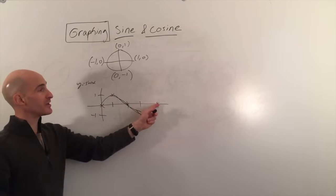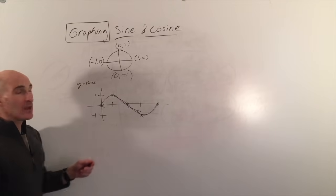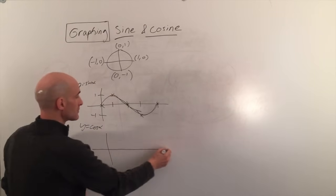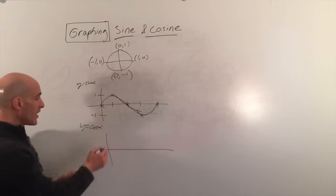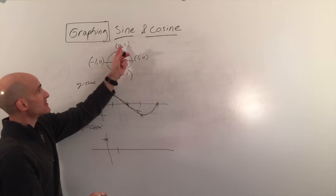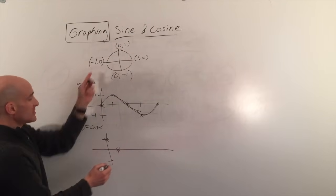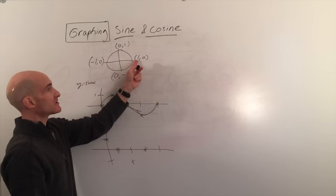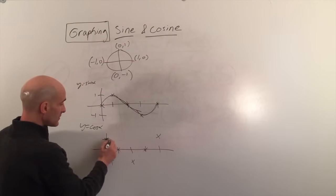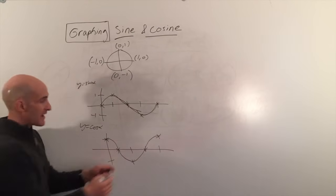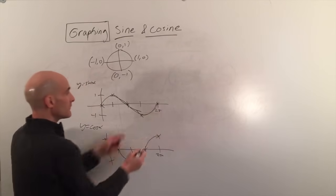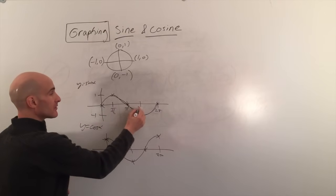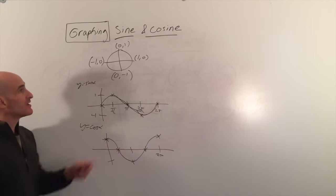So there's one cycle, one period, and it keeps repeating — that's a sine wave. Now if we want to graph cosine, we're going to look at the x-coordinate. At 0 degrees, cosine is 1, so it starts up at the max. At 90 degrees it goes to 0. At 180 degrees it's down to negative 1. At 270 it's back to 0. And at 360 degrees you're back to 1. One period is 2π. If you divide the period into four pieces, 2π divided by 4 is π/2, then π, 3π/2, and 2π. That comes from the unit circle.